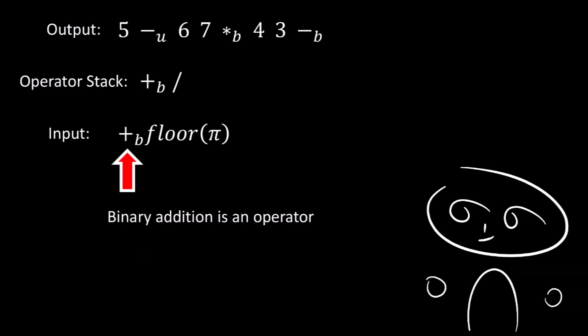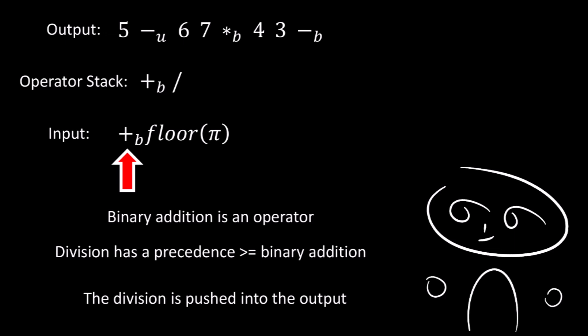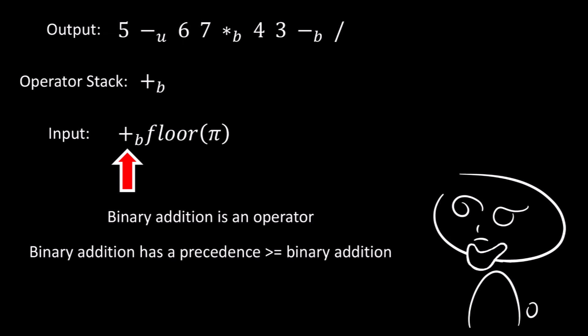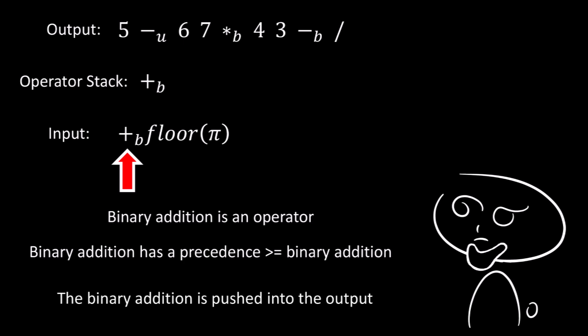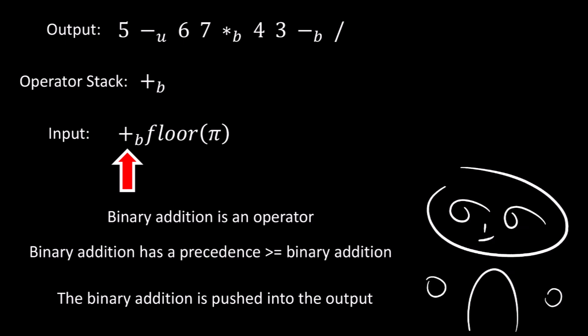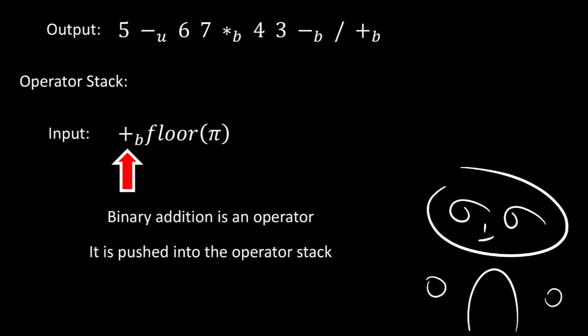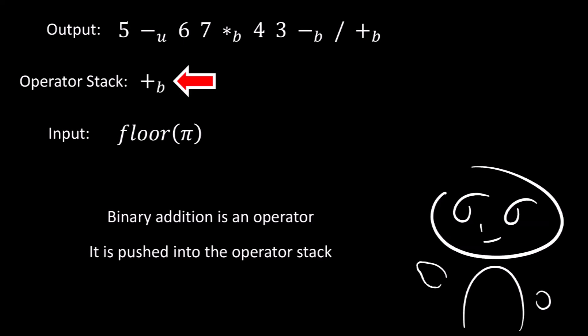Then we find a binary addition, which is an operator. Since division has a precedence greater than or equal to that of the binary addition operator, the division operator is pushed into the output. Then we compare the binary addition to the binary addition in the operator stack, and since the precedence is greater than or equal, we push the binary addition from the operator stack into the output. Finally, we take the new binary addition and push it into the operator stack.